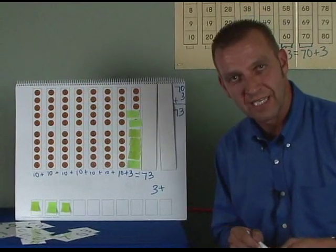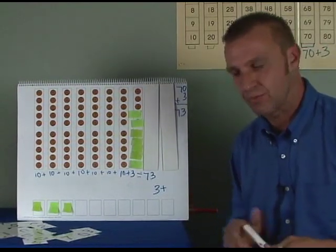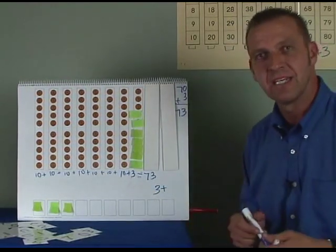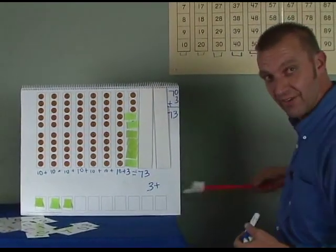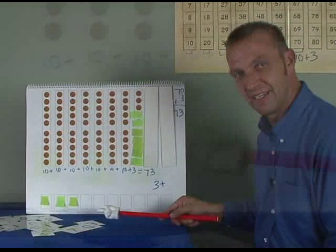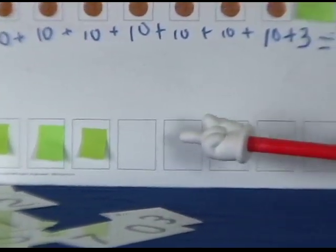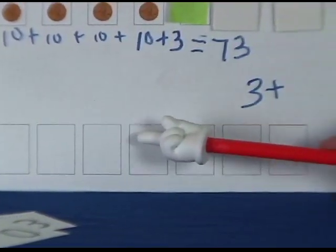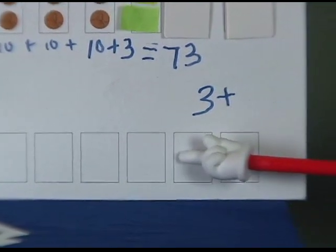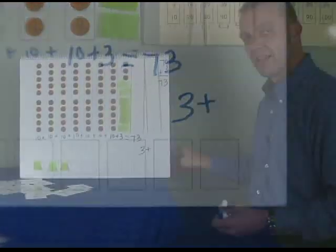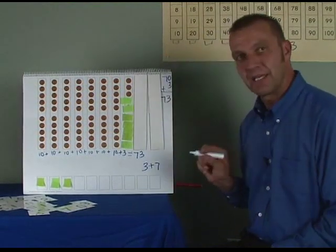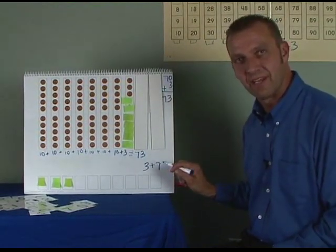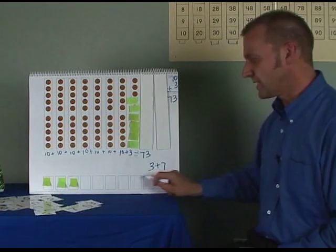How many more sticky notes do I need to put down here at the bottom to make a new 10? Let's count them together. Ready? 1, 2, 3, 4, 5, 6, 7. Let's write the number 7. Because 3 plus 7 makes a new 10.